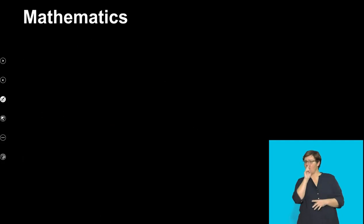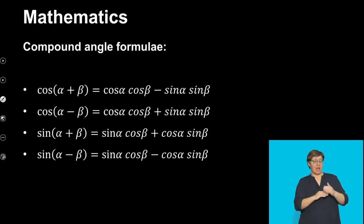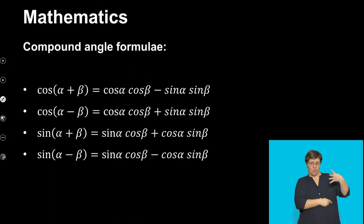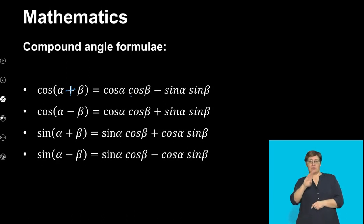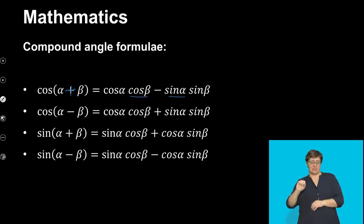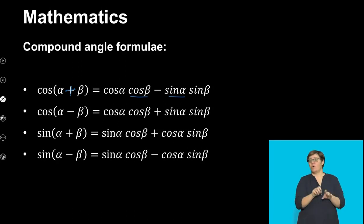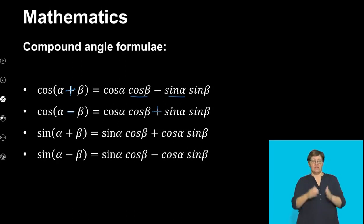Can you remember what your formulae looked like? Let's just revise. The compound angle formulae — there were four that we've learned. cos(α + β) becomes cos α cos β − sin α sin β. And when you have a negative value, it's the same except the minus sign on the sin term becomes a positive.